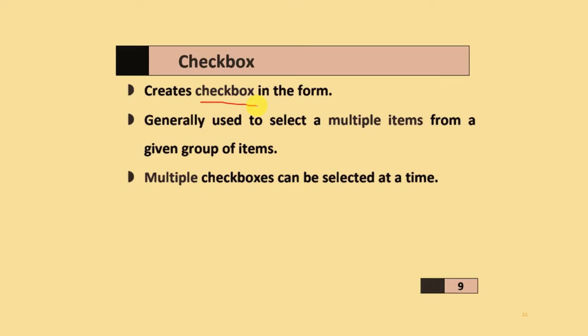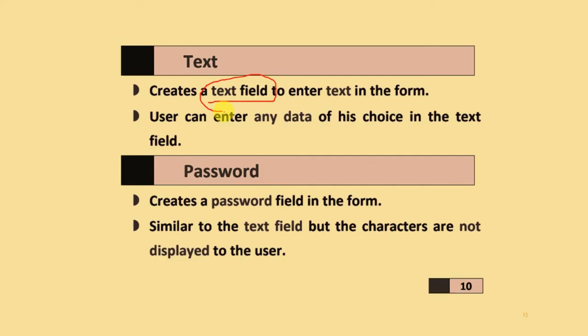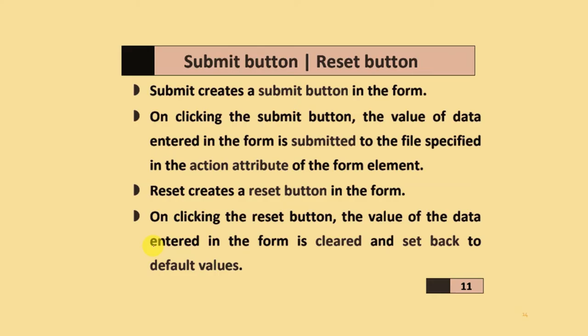A checkbox is generally used to select multiple items from a given group of items, and multiple checkboxes can be selected at a time. A text field creates a text input where the user can enter any data of their choice. A password field is similar to the text field, but the characters are not displayed to the user.